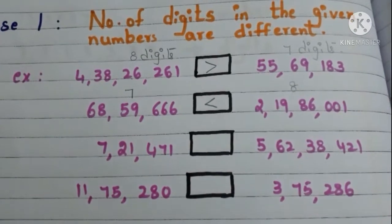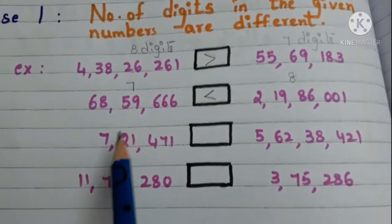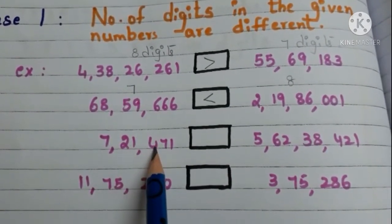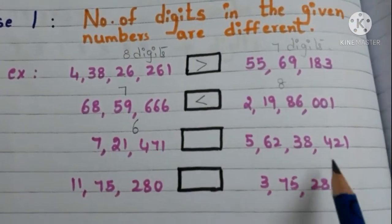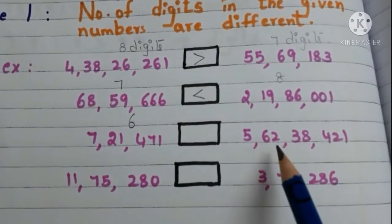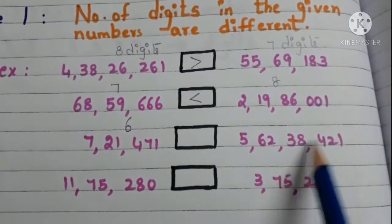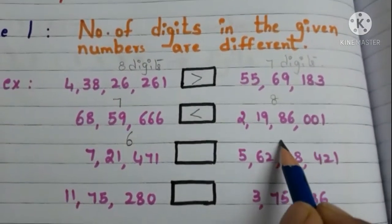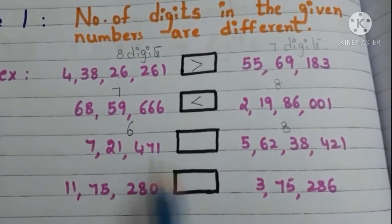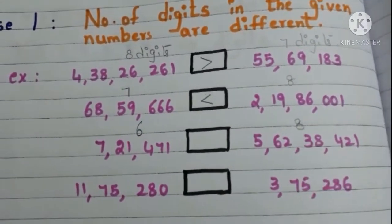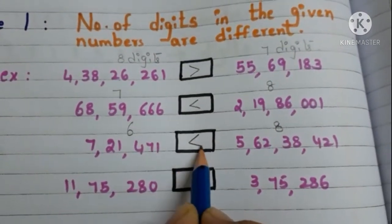Let us go to another example. First, let us count how many digits are there in this number. 1, 2, 3, 4, 5, 6. 6 digits. Now let us count how many digits are there in this number. 1, 2, 3, 4, 5, 6, 7, 8. 8 digits are there. Here a 6-digit number is always less than an 8-digit number. So this number is less than this number.